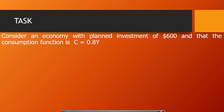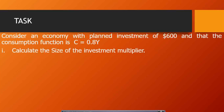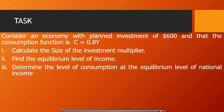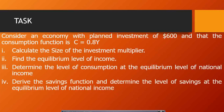Now let me present the tasks we need to answer. Try to solve these questions before looking at my solution, then compare with what I present. Our tasks are: calculate the size of the investment multiplier; find the equilibrium level of income; determine consumption at the equilibrium level of national income; and derive the savings function and determine savings at the equilibrium level of national income.